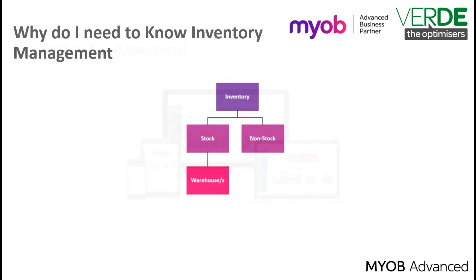Inventory items are split into stock and non-stock items. Stock items are physically held in one or more warehouses. They can have a serial number or a lot number, and you can even set a costing method for an individual stock code.